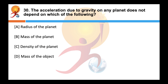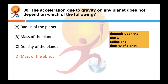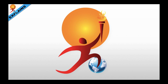Acceleration due to gravity on any planet does not depend on which of the following? Correct answer is D: the mass of the object. The value of g on any planet depends on the mass, radius, and density of the planet, but it is not dependent on the mass, shape, or density of the body placed on the surface of the planet. If you have any doubts, feel free to comment. Thank you and see you in the next one.